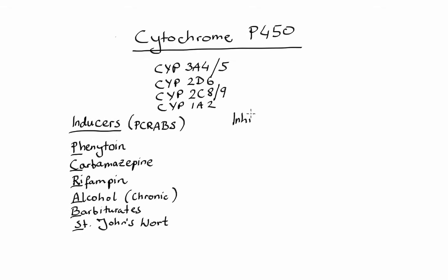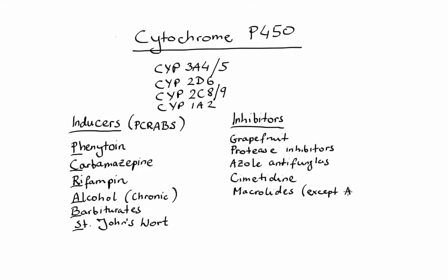On the other hand, some of the important inhibitors are grapefruit, protease inhibitors, azole antifungals, cimetidine, macrolides with exception of azithromycin, amiodarone, and non-dihydropyridine calcium channel blockers such as diltiazem and verapamil. A good mnemonic that you can use to remember these is GPACMAN.